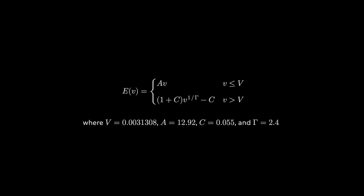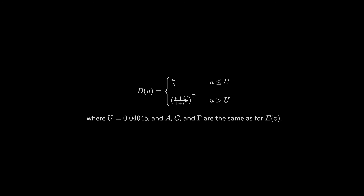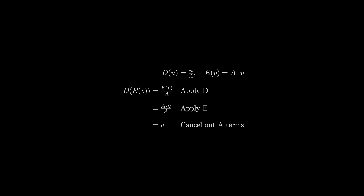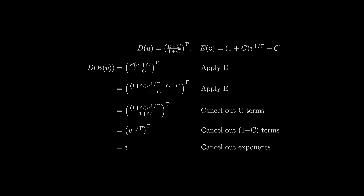For sRGB, the OETF is defined as follows. Lowercase v is the lightness value — how much light hit the camera sensor — and E is the encoded signal, the RGB value we put in the video file. We can define the reverse OETF from that. To verify we have the correct inverse, we can plot them both on a graph and see symmetry across the y equals x axis — it looks a little like an almond. Another way is to compute D of E of V and simplify to see if we fall back to V, first with the linear part, then with the exponential part. And yes, we do.